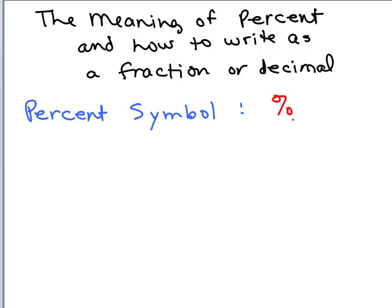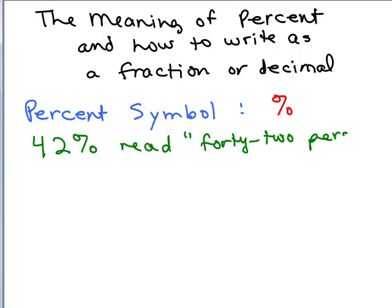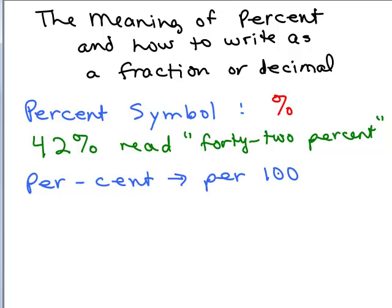The percent symbol looks like this symbol here in red. So if I were to write 42 percent, that's what it would look like — you read this as 42 percent. Now what does that mean? Let's look at that word 'percent' and break it up. What does 'cent' mean? Usually it's a hundred. So you could think of this as 'per 100' of something, which can also be thought of as 'out of 100.' So when you read 42 percent, you could think of this as 42 out of 100.